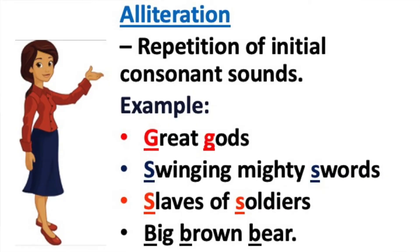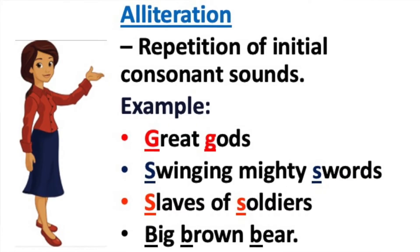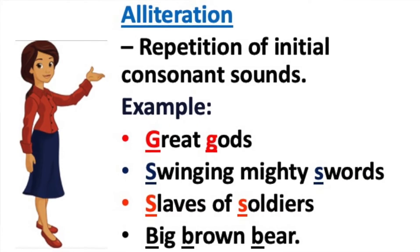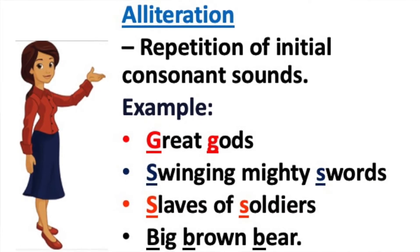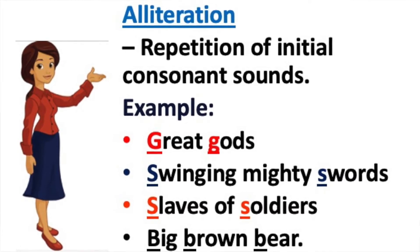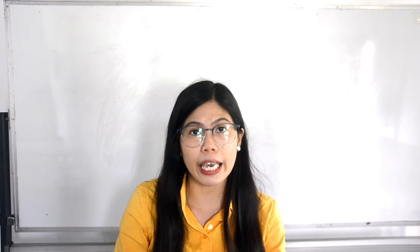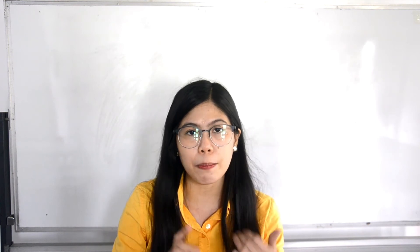Alliteration is the repetition of initial consonant sounds. The consonant letters are those that don't belong to the vowel letters A, E, I, O, U. Consonant letters are B, C, D, F, G, H, J, K, L, M, N, P, Q, R, S, T, V, W, X, Y, Z.